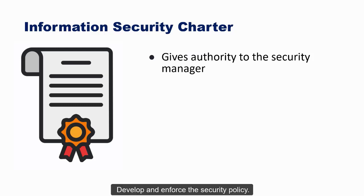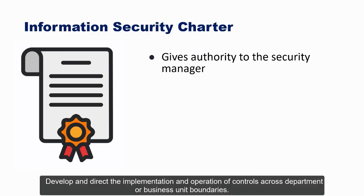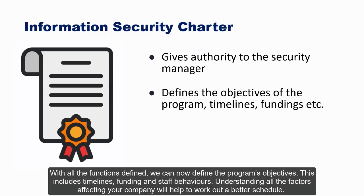An information security program charter gives authority to the security leader to develop and perform several functions, including: (1) develop and enforce the security policy; (2) develop and implement the risk management process; (3) develop and manage security governance; (4) develop and direct the implementation and operation of controls across department or business unit boundaries; and (5) develop and direct the implementation of key security processes, including vulnerability management, incident management, third-party risk, security architecture, business continuity planning, and security awareness training.